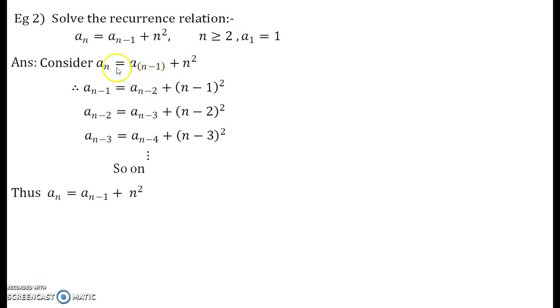In this original equation of recurrence relation, you replace an minus 1 by the recurrence relation that we got. So, that an minus 1 will be now written as an minus 2 plus n minus 1 the whole square. So, that is what I have written. But we also know the value of the recurrence relation for an minus 2 that is an minus 3 plus n minus 2 the whole square.